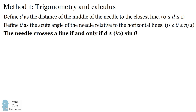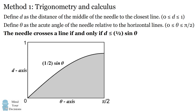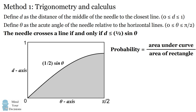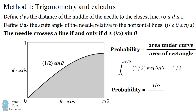We'll now consider the space of d and theta and make a graph. The condition that the needle crosses is the shaded region in this graph. We can compute the probability the needle crosses a horizontal line as the area under the curve divided by the area of the entire sample space — the rectangle. The area under the curve is computed using calculus: the integral from zero to pi over two of one-half sine of theta d-theta, which gives us one half. The area of the rectangle has width pi over two and height one, giving us pi over two. This yields the probability the needle intersects one of the horizontal lines as one divided by pi.